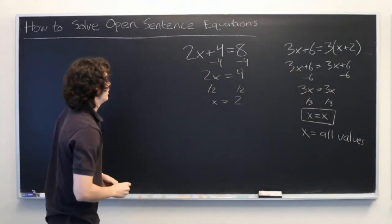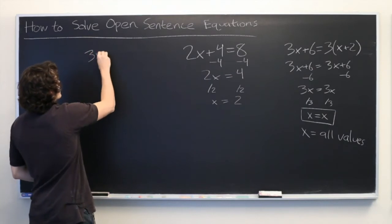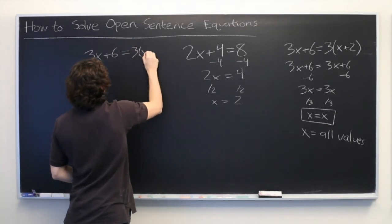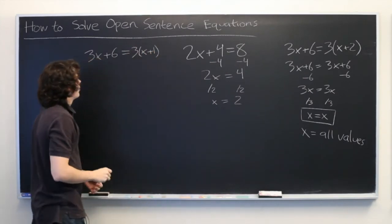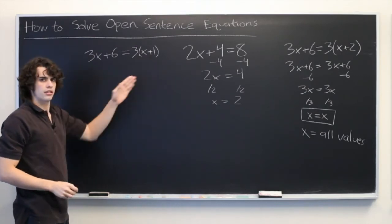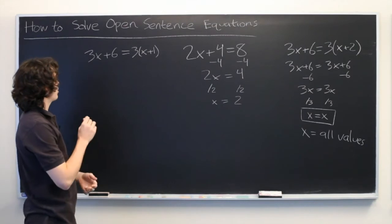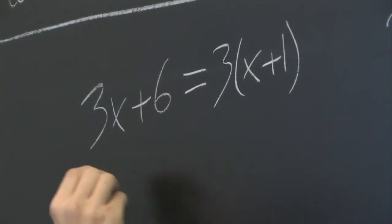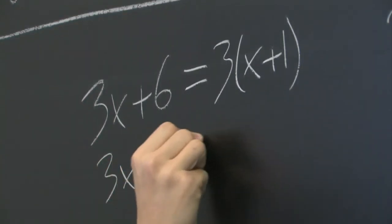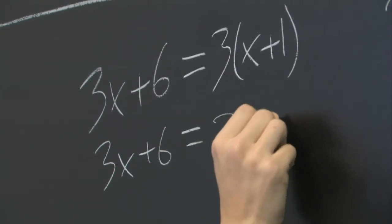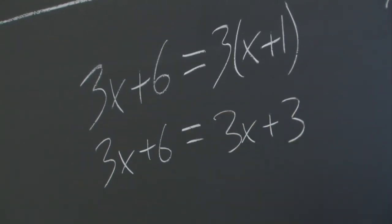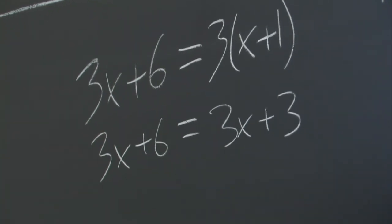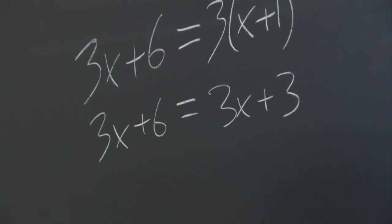Okay. Last example, similar to the one we just did. 3x plus 6 equals 3 times x plus 1. You might think that since we've changed the value inside here, that this time we're going to get a definitive solution. But what actually happens is somewhat different. Let's distribute the 3 again. We get 3x plus 6 equals 3x plus 3. Here, let's subtract 3x from both sides. It may seem strange that we're eliminating our variable altogether, but you'll see why in a second.